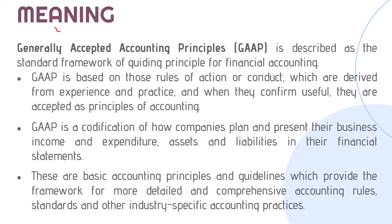Now let's start with the meaning of GAAP, Generally Accepted Accounting Principles. These are basically the standard framework which guides principles for financial accounting. It is a code which describes how the company should plan and present their business, their income and expenditure, assets and liabilities in their financial statements. These are rules of action or conduct which are derived from experience and practice.